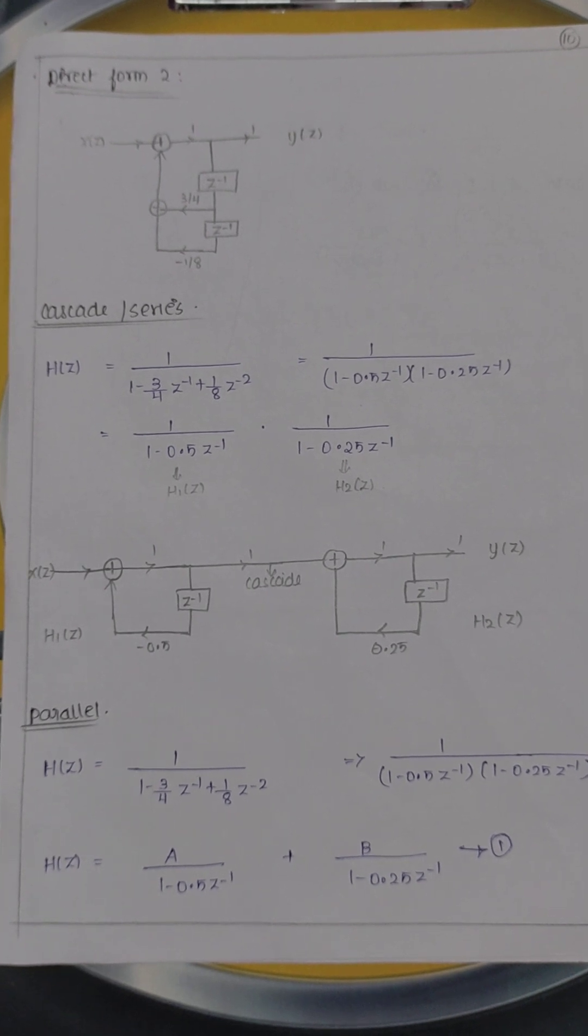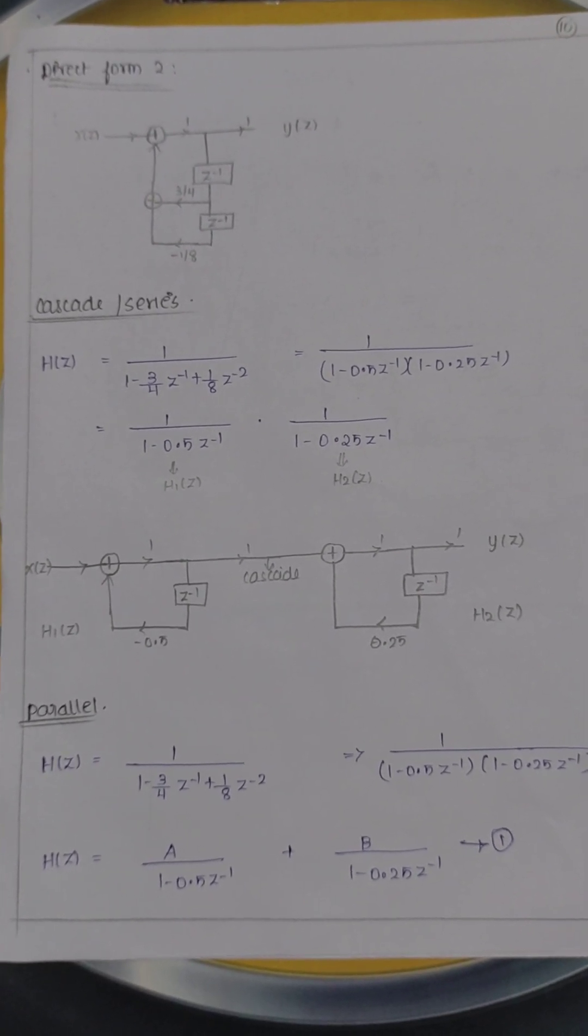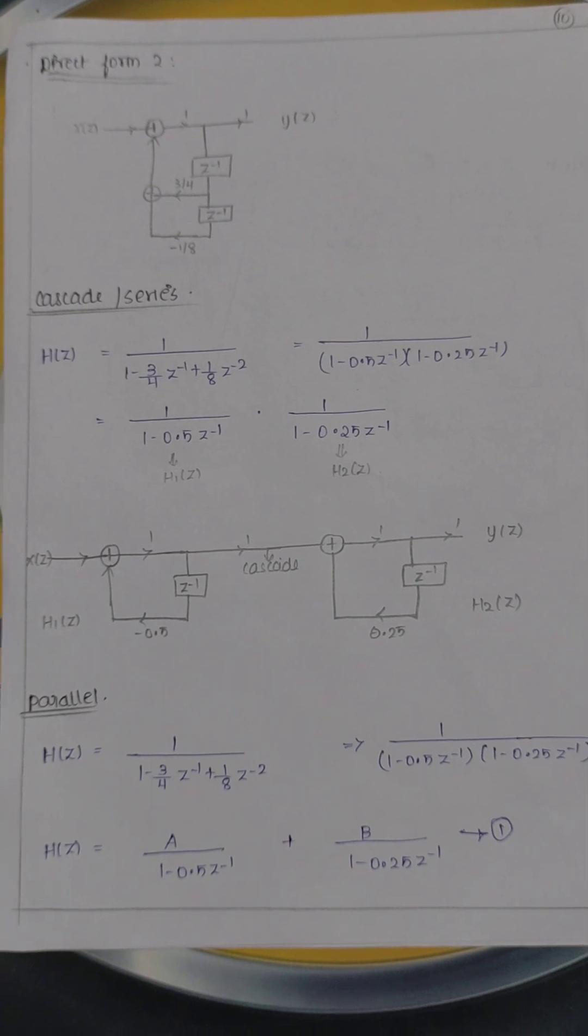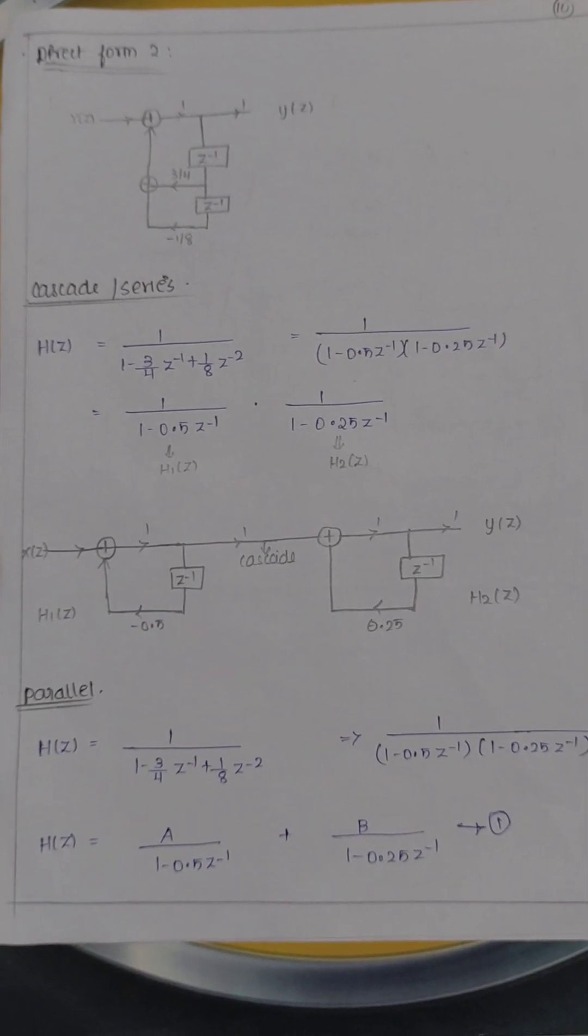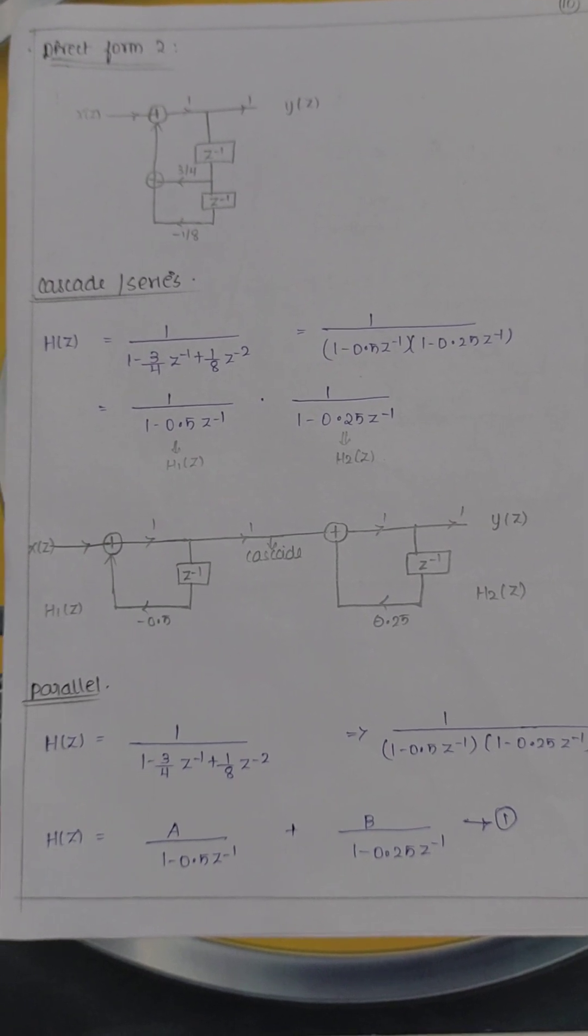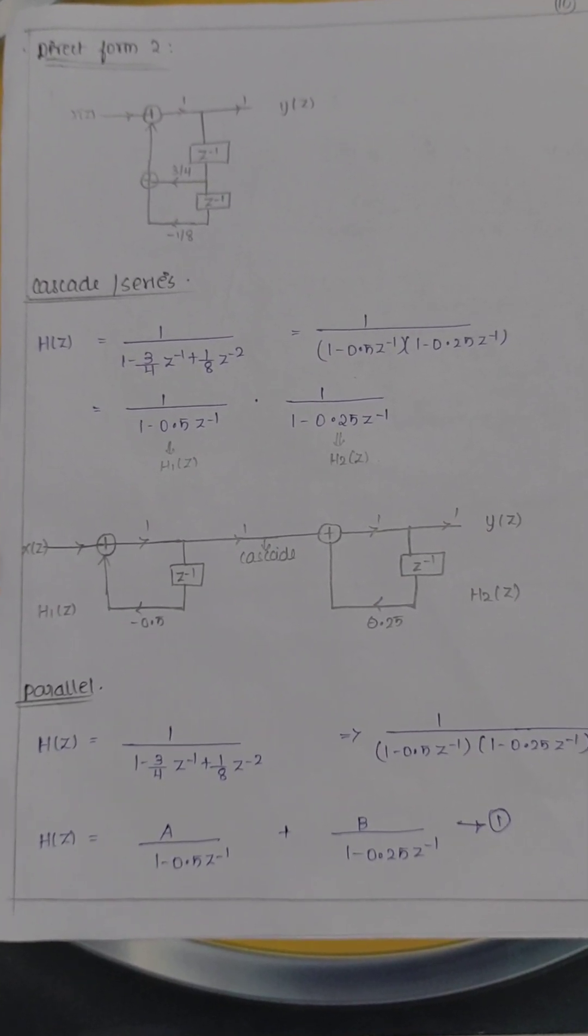So H(z) becomes h1(z) into h2(z), cascade form. My h1(z) equals first bracket, 1 divided by 1 minus 0.5 z inverse. My h2(z) equals second bracket, 1 divided by 1 minus 0.25 z inverse. Then you have to draw the diagram.